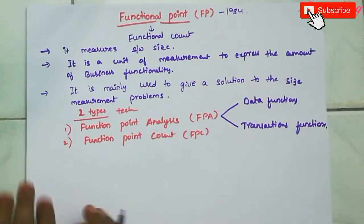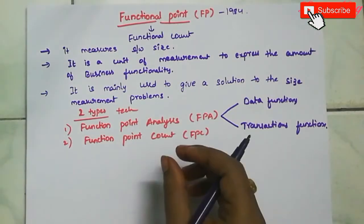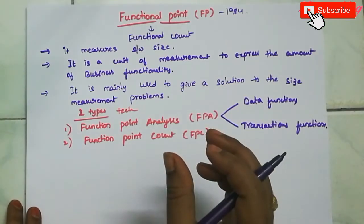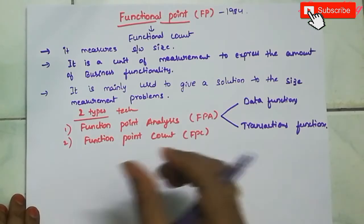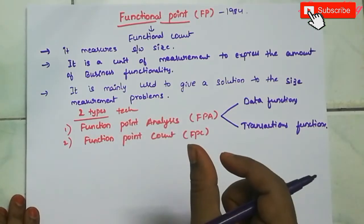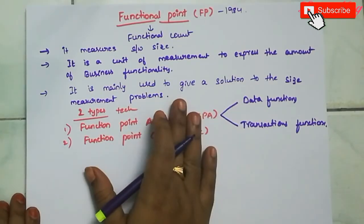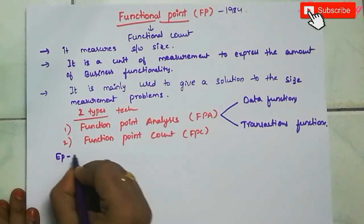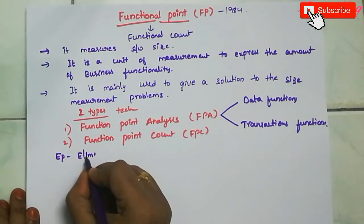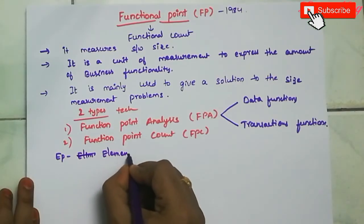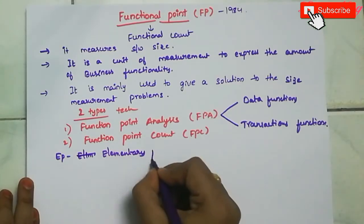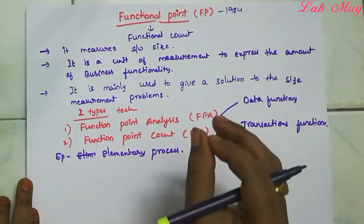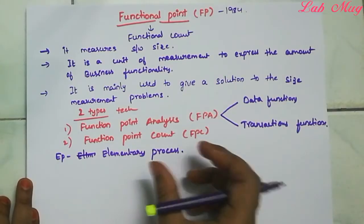Each and every functional point is one unit. So what is an elementary process? Elementary process, abbreviated as EP, is the smallest unit from functional user requirements. In user requirements, the smallest unit is the EP - the elementary process.